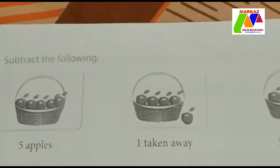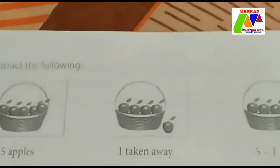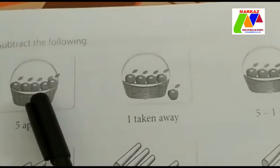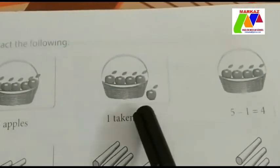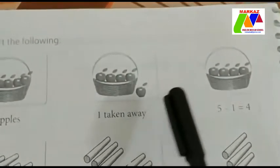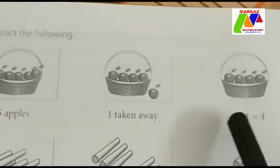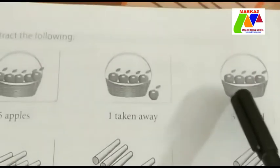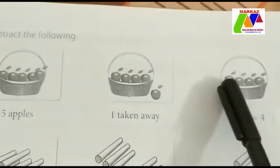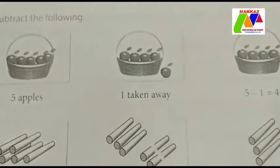Next, subtract the following, page number 79. First one: here we can see 5 apples in a basket. 1 taken away. So how many apples in the basket? 5 minus 1 is equal to — please count it: 1, 2, 3, 4. Here we can see 4 apples. So 5 minus 1 is equal to 4. Is it clear?